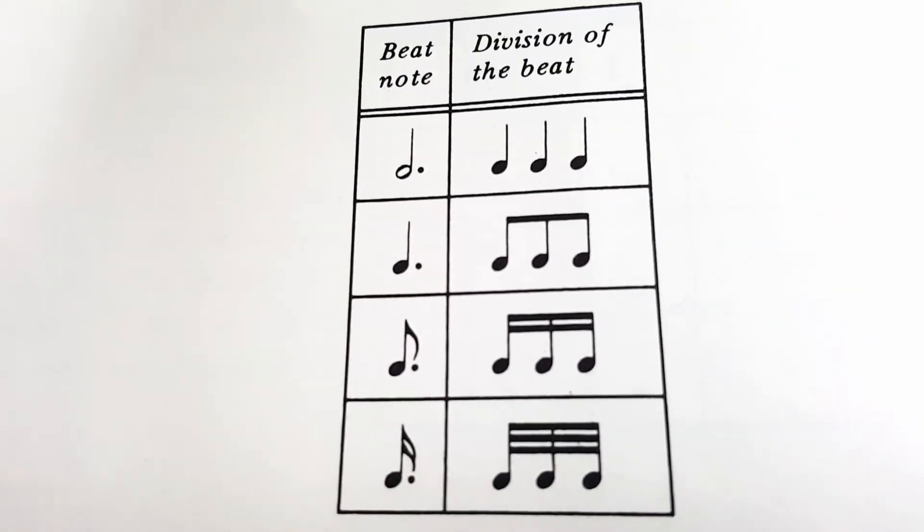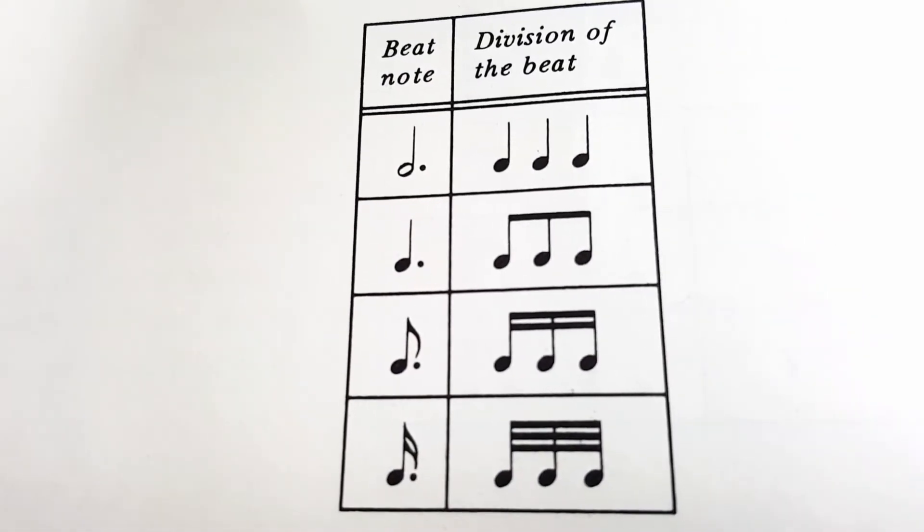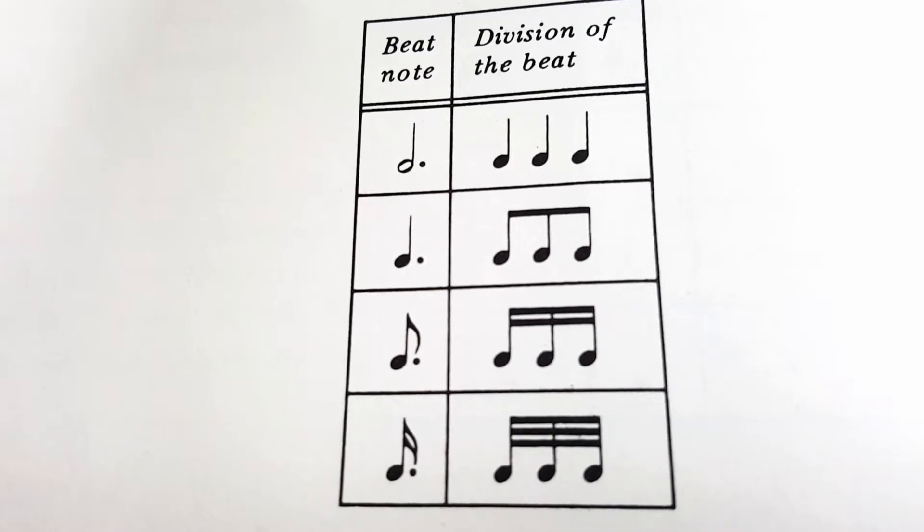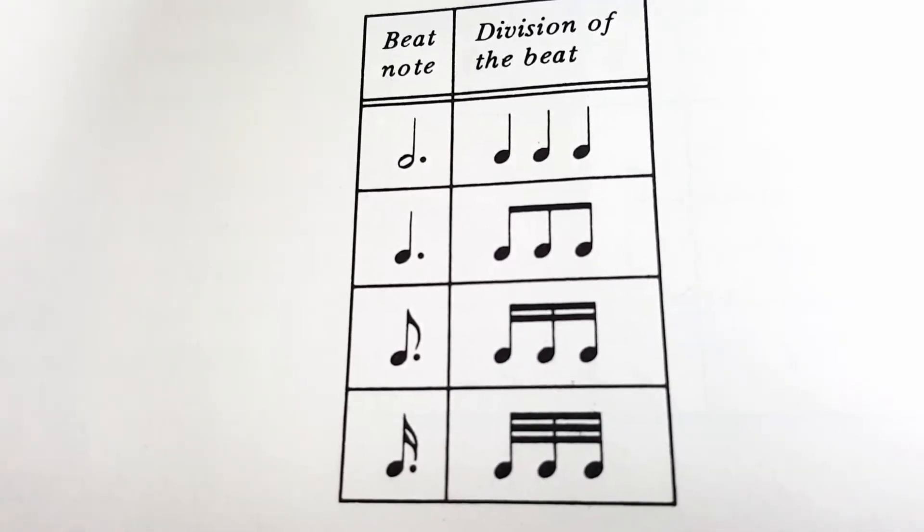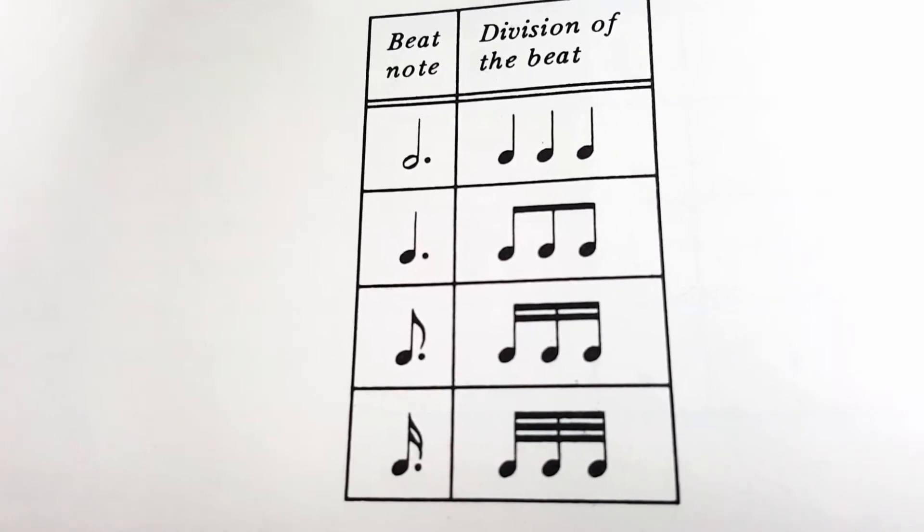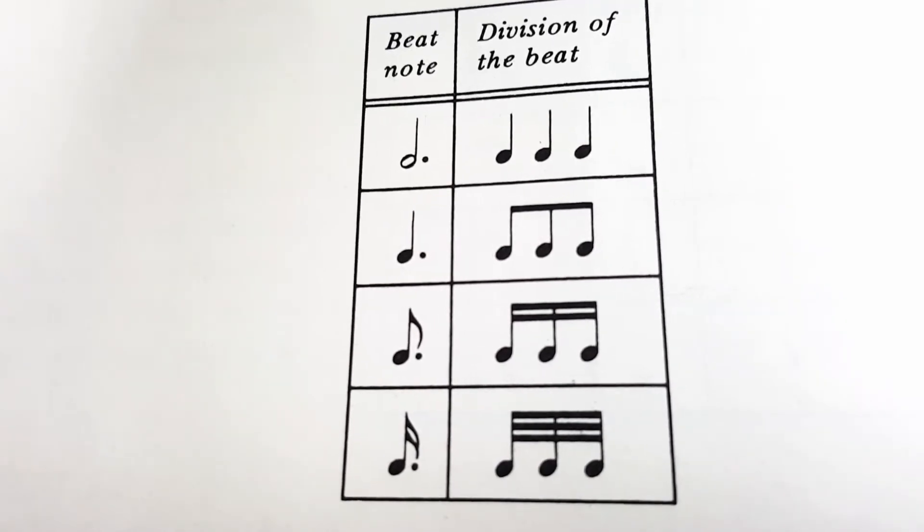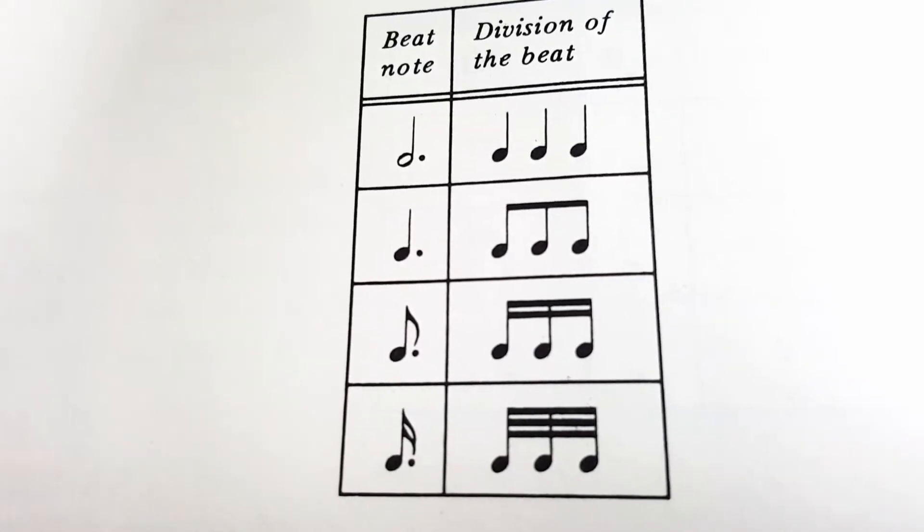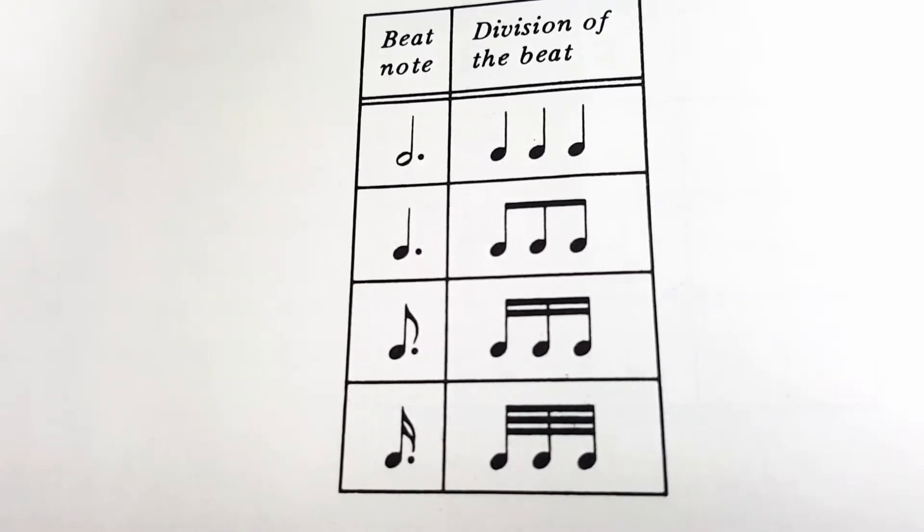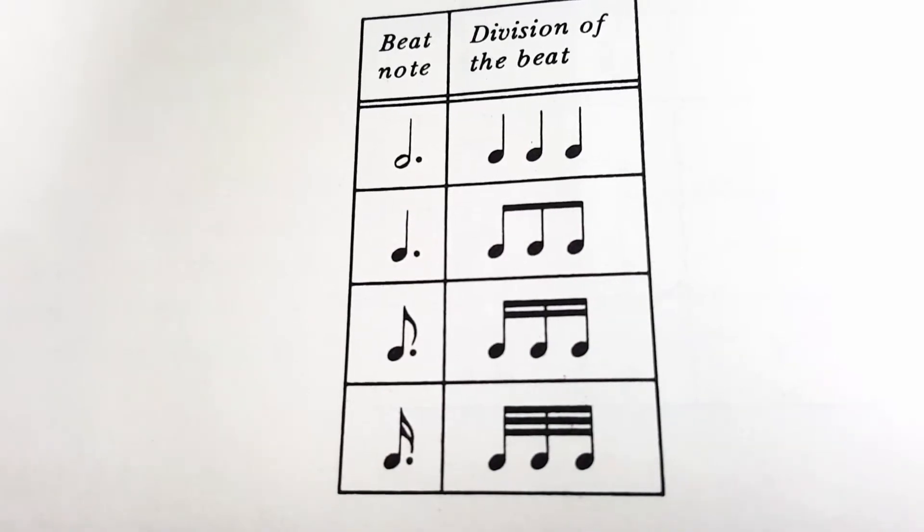And you're going to be seeing this when I show you some examples. You should keep in mind, as you look at this chart, that as you have a dotted half note, you'll also have a dotted half rest. You have a dotted quarter note, so you could have a dotted quarter rest. And the same is true for a dotted eighth note and a dotted sixteenth note.